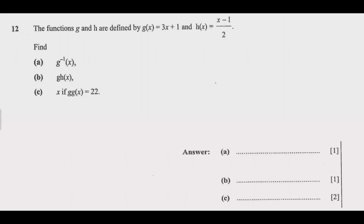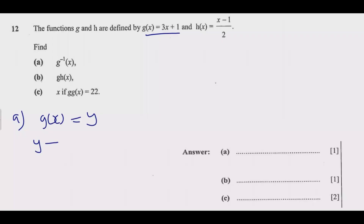Question 12 reads: the functions g and h are defined by g of x equals 3x plus 1, and h of x equals x minus 1 over 2. Find g inverse of x. When you see g to the negative one of x, it means you're finding the inverse. This is a common question that comes every year. The principle is: let g of x be equal to y, so y equals 3x plus 1.